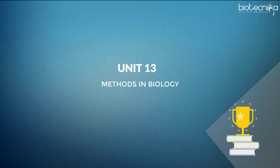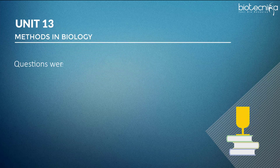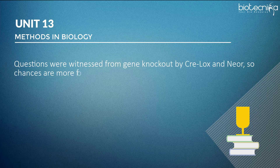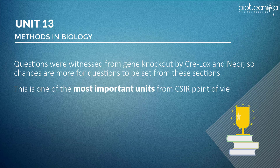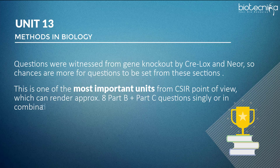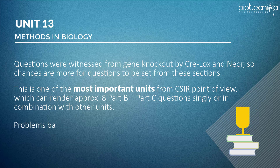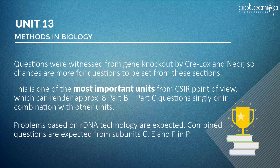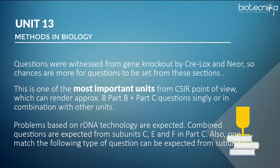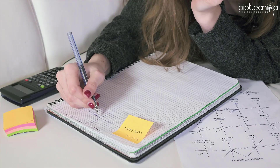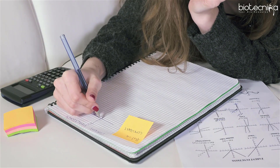Unit 13 — Methods in Biology: Questions were witnessed from gene knockout techniques, so chances are more for questions to be set from these sections. This is one of the most important units from a CSIR point of view, which can render approximately eight Part B plus Part C questions singly or in combination with other units. Match-the-following type questions are expected from subunit C and F in Part C, and also from subunit G.